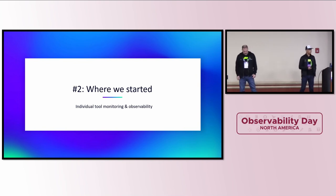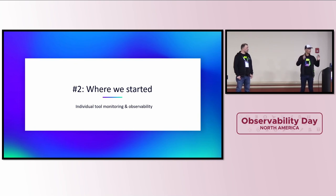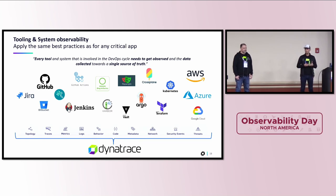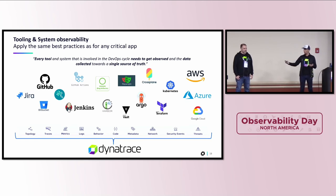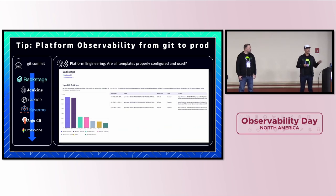We started by thinking about all these tools — starting with the Jira ticket, going into Backstage, getting the Git repository, and then everything magically happens. There are a lot of tools involved, and we want to make sure all of them are treated with the same observability respect as business-critical apps. For our engineers, our platform is the most business-critical thing — without it, nothing works. So we need to monitor every single tool. All the dashboards we share are also available in a Git repository with queries against Prometheus and logs.